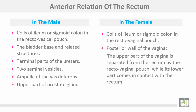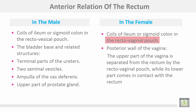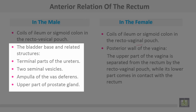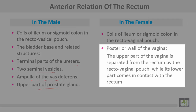Anterior relations of the rectum — comparing male and female. In the male: coils of the ileum or sigmoid colon and the rectovesical pouch. In the female: coils of the ileum or sigmoid colon and the rectovaginal pouch. In the male, additional relations include the bladder base, terminal part of the ureters, two seminal vesicles, ampulla of vas deferens, and upper part of the prostate gland. In the female: the posterior wall of the vagina; the upper part of the vagina is separated from the rectum by the rectovaginal pouch (Douglas pouch).